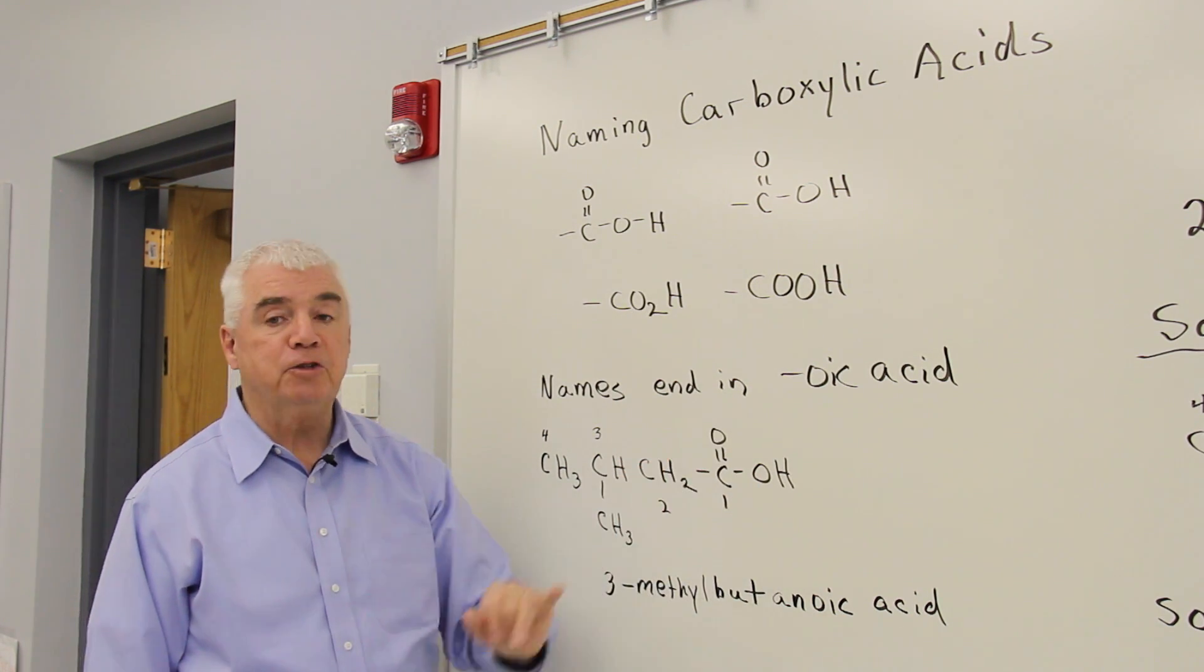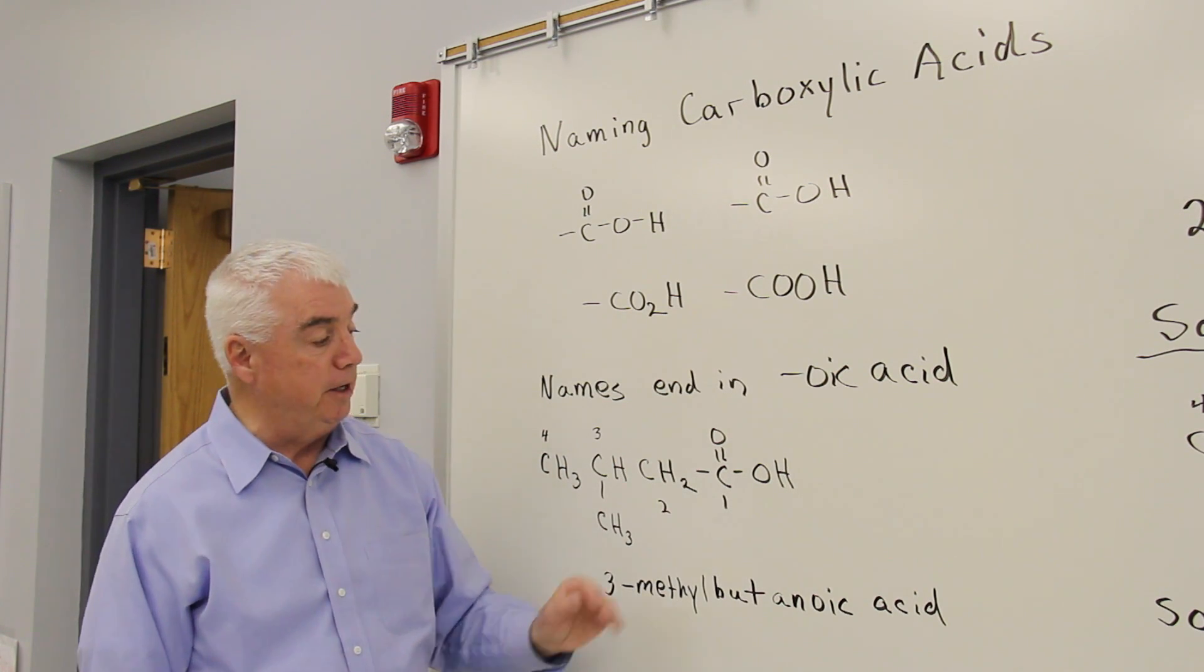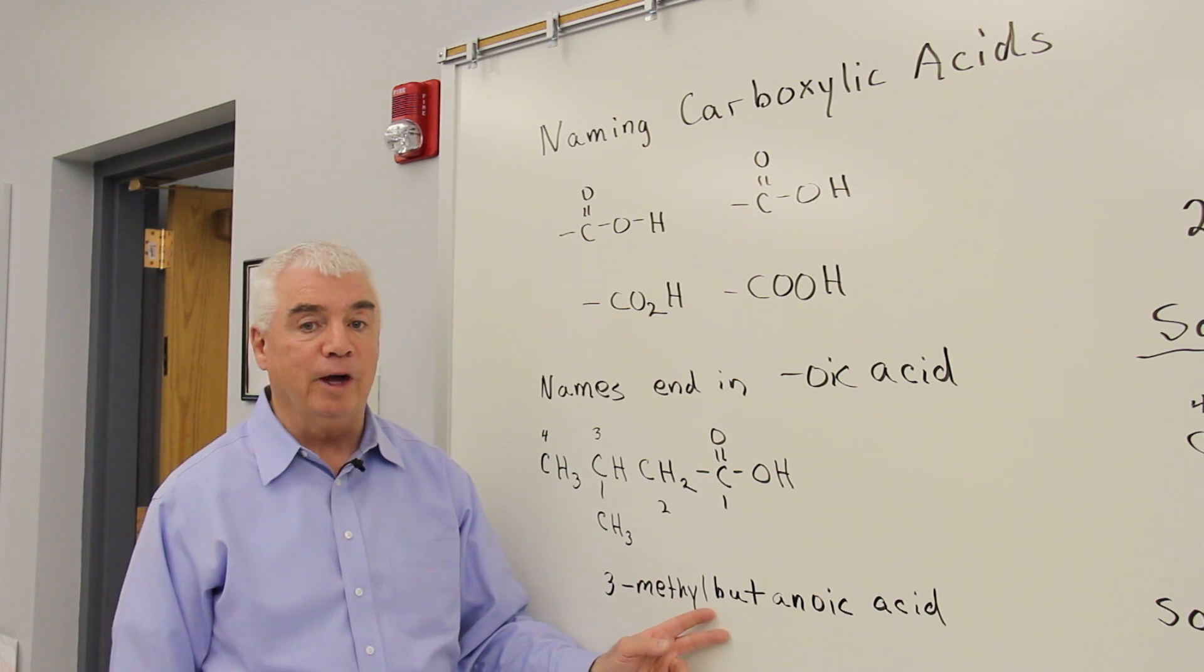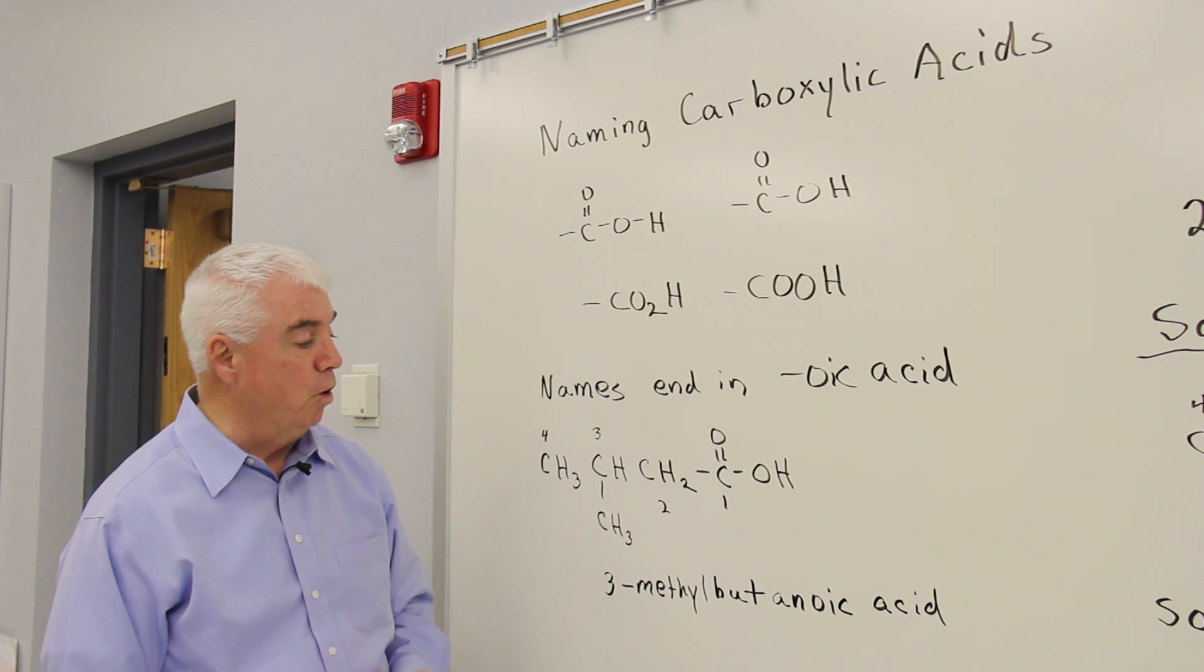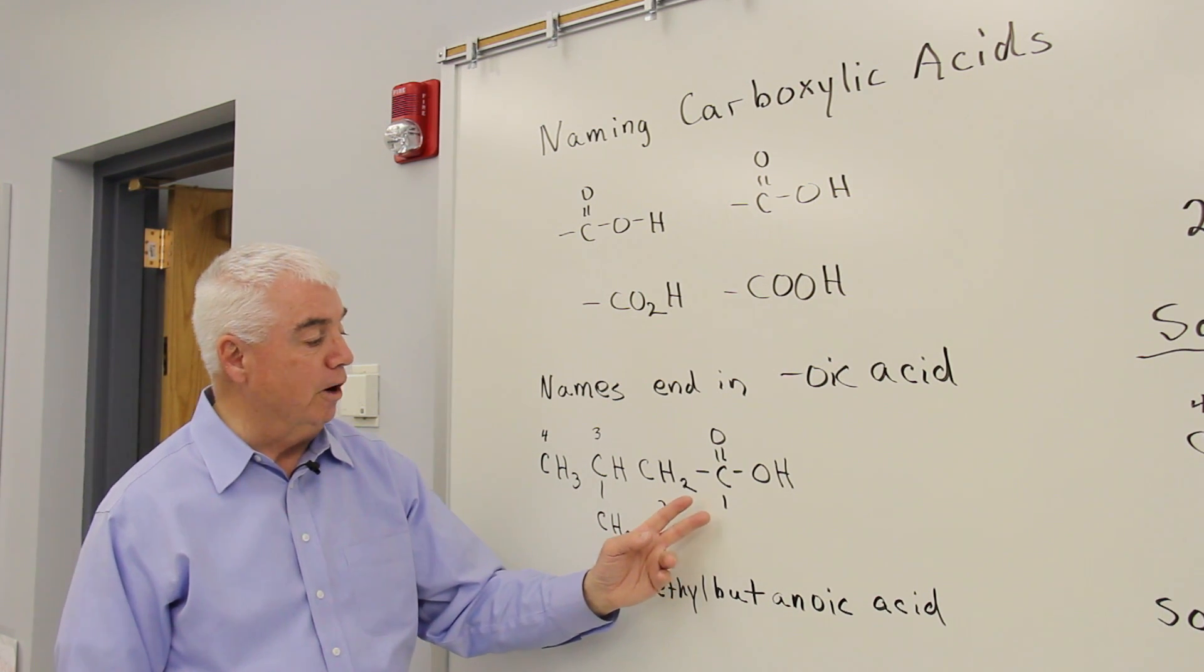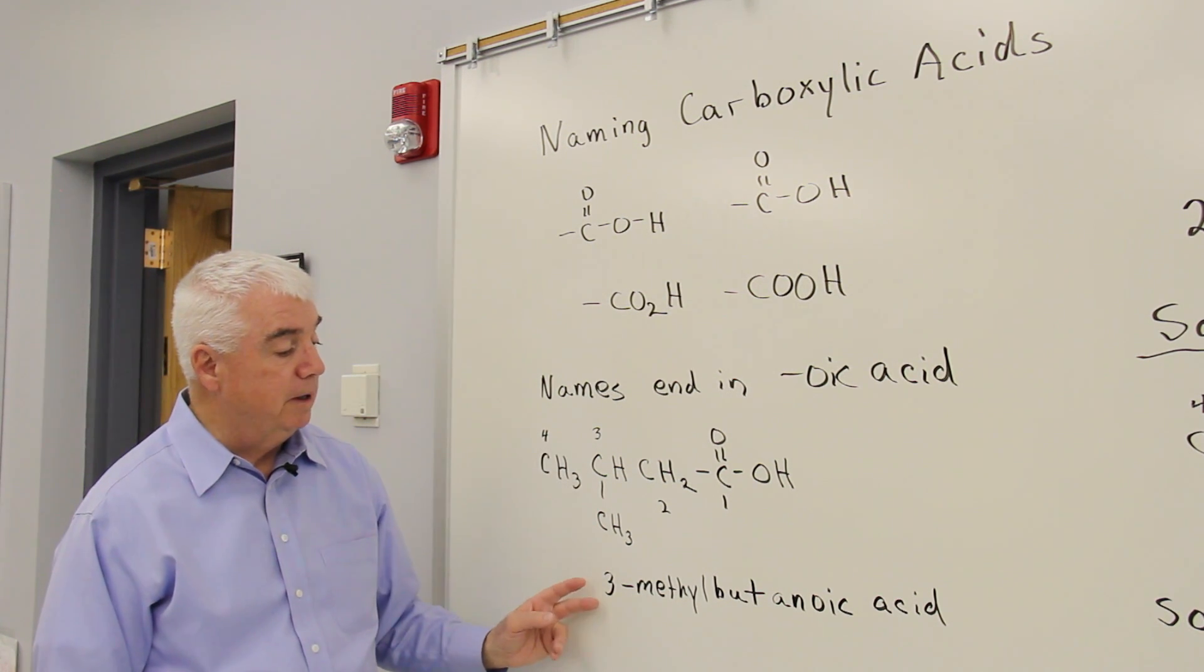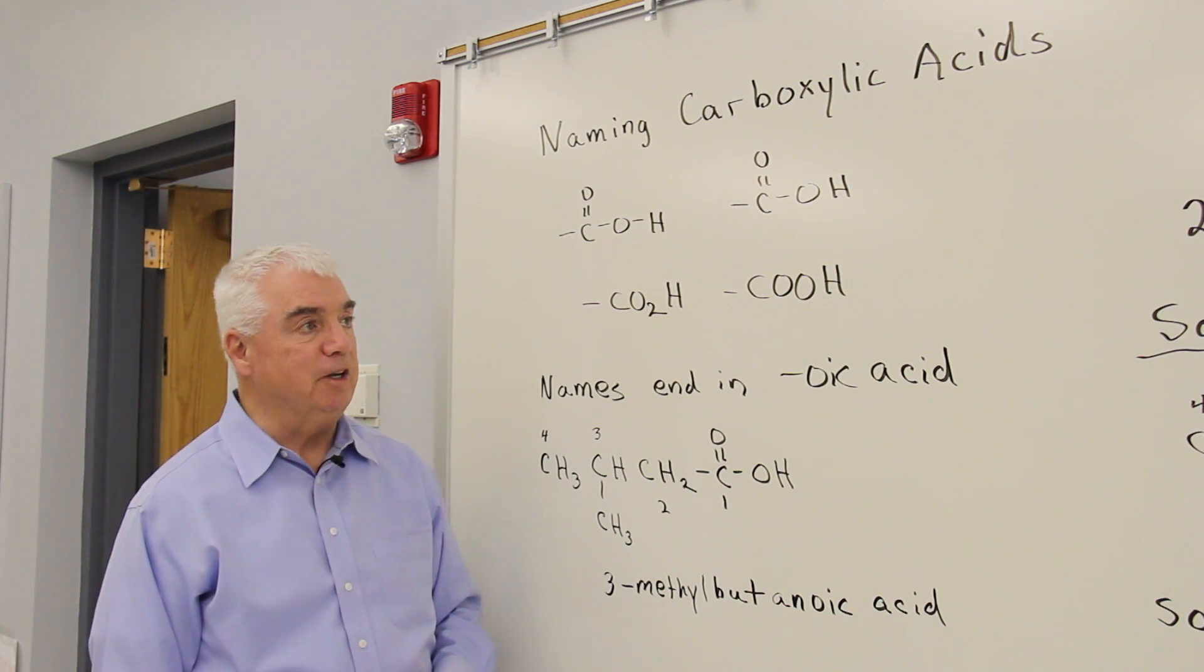And the carboxylic acid group is like the aldehyde. It'll always be on the end of the chain. It'll always be at position number one, and so I didn't put in one butanoic acid because it's assumed that it's at position one. But it establishes the numbering system for us: one, two, three, four. At position three, we have a methyl group. The complete name then is 3-methylbutanoic acid.